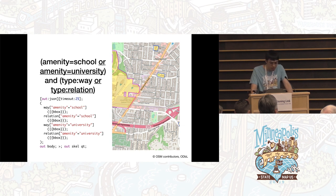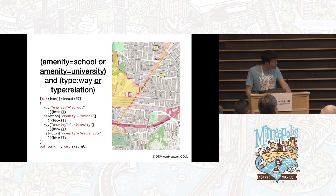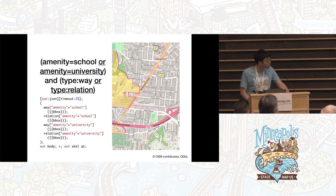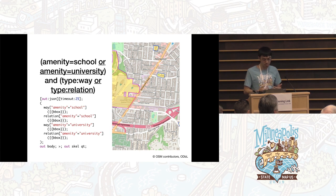Here's where I've added the university and multi-polygon relations. We can see that the OR operator adds more lines to the query. Depending on what you're searching for, it could slow things down if you have a lot of ORs.